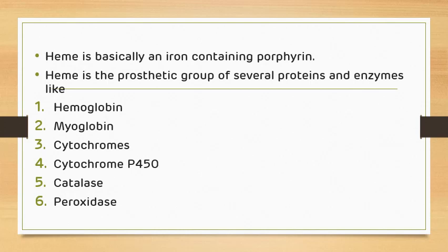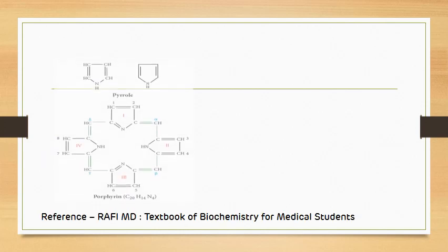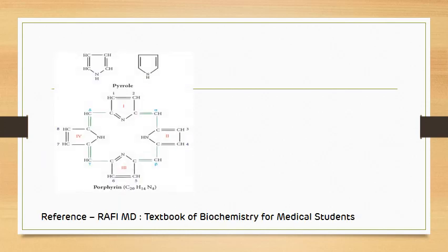Now before proceeding towards the main pathway, let's see the structure of heme. Heme is formed from four pyrrole rings which are joined together with the help of methenyl bridges. These bridges are called methenyl bridges and this is called a pyrrole ring.